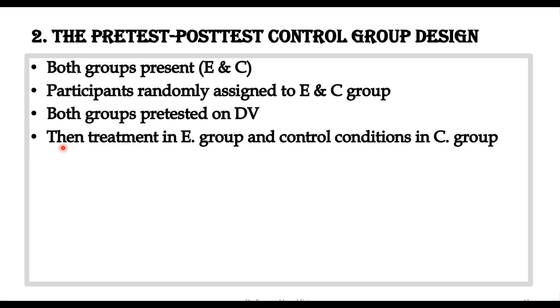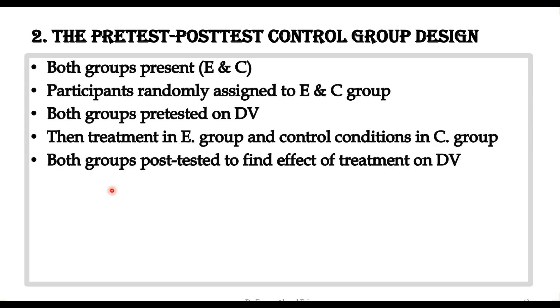We adopt the normal procedure of doing the experiment: treatment is offered in the experimental group and the control condition is offered in the control group. Then both groups are post-tested to find the effect of treatment on the dependent variable.